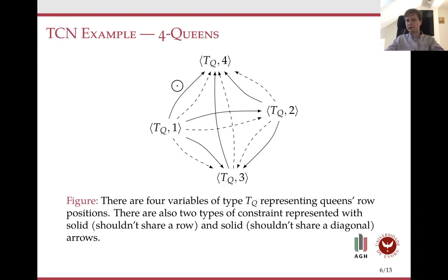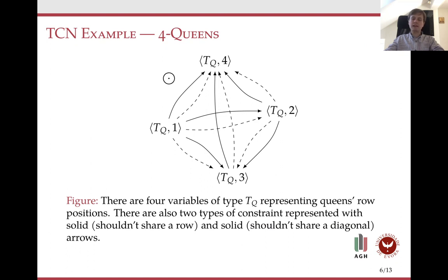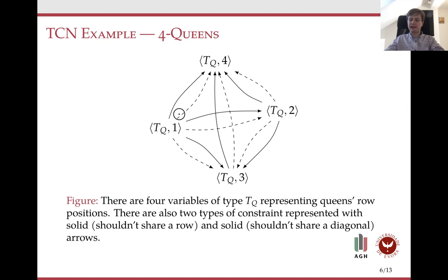Another example would be the four queens problem. In four queens, we have only four variables of the same type — TQ — which represent the row positions of the queens in given columns. Then we have two constraint types. The first one, depicted with a straight line, is that two queens cannot share the same row. And the second one, depicted with a dashed line, is that two queens cannot share a single diagonal.